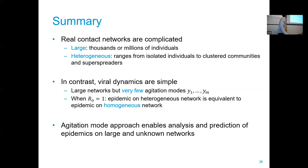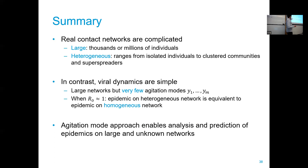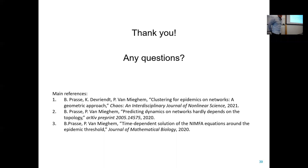In summary: we have complicated networks that may be large and heterogeneous, but in contrast, the epidemic dynamics are simple — very few agitation modes suffice in the proper orthogonal decomposition. Even more so, when R₀ is close to 1, the epidemic on a heterogeneous network reduces to an epidemic on a homogeneous network. Methodologically, the agitation mode approach is an interesting tool for discovering low-dimensional structures in high-dimensional data. Thank you.